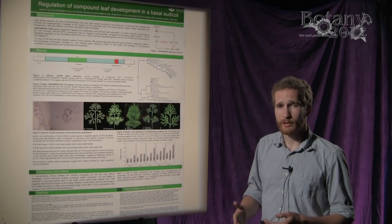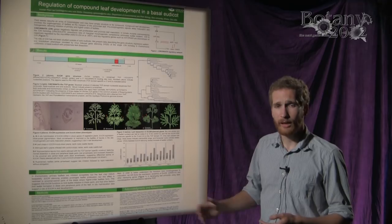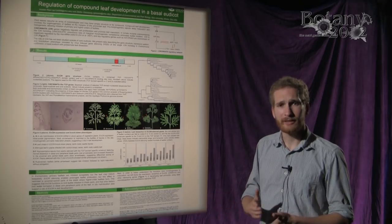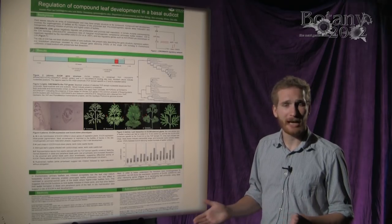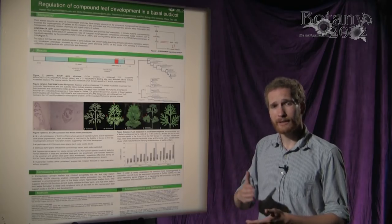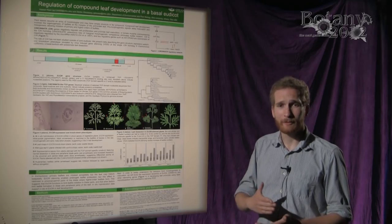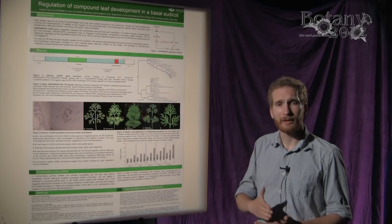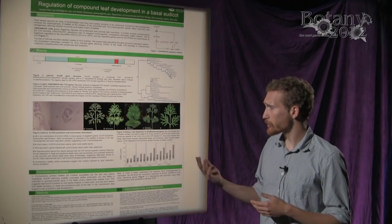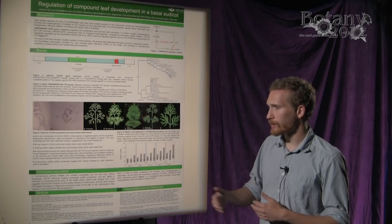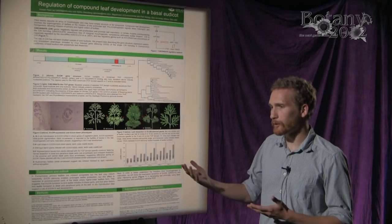Subsequently, I'll also go on to look at other basal eudicot species — more specifically, members of the Papaveraceae: Cysticapnos vesicaria and Hypecoum procumbens. These have leaves with different morphologies and also different leaf developmental processes, so it will be interesting to compare these developmental processes from the point of view of gene expression.